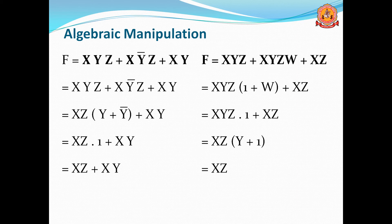In both terms xz is common, and since the second term has no y, it contributes 1, giving xz(y + 1). Since y + 1 = 1, we get xz·1 = xz. So the final result is xz. This is algebraic manipulation.